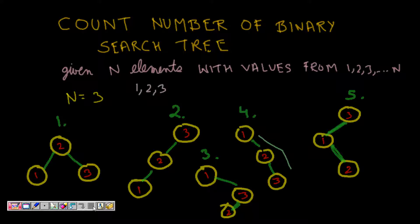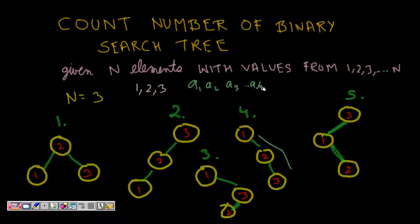So now the question is, we have to count the number of all binary search trees that are possible to construct using n numbers which are all unique. Let them be 1, 2, 3, 4 till n, or any a1, a2, a3 till aN, where a1 is less than a2, a2 is less than a3, and so on. So all are unique elements.